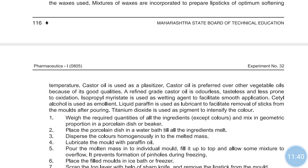Isopropyl myristate is used as a wetting agent here for smooth application. Cetyl alcohol is used as an emollient, having the quality of softening or soothing. Liquid paraffin is used as a lubricant to facilitate removal of the sticks from the molds after pouring.